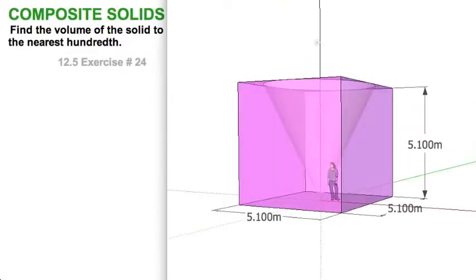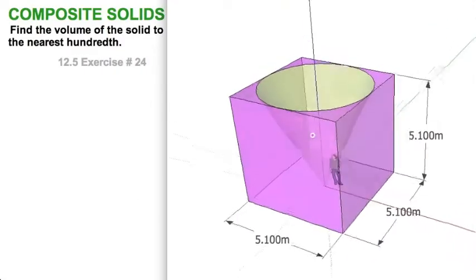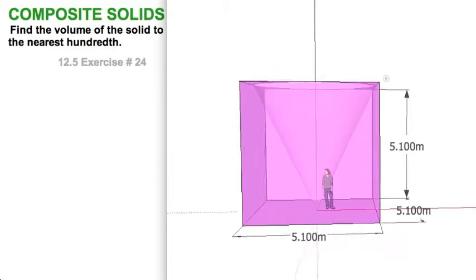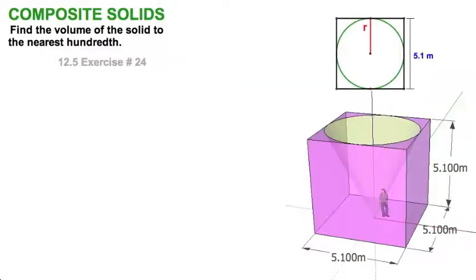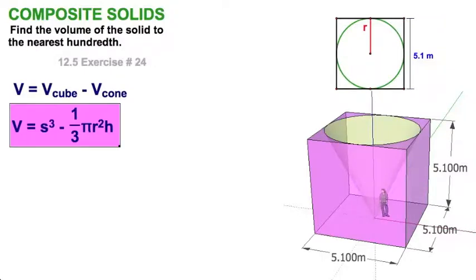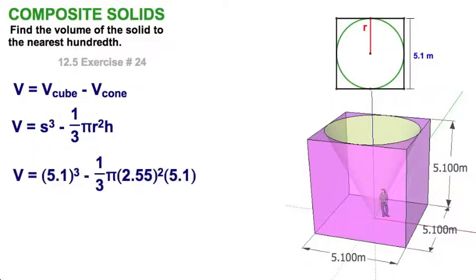Well, here we are with another composite solid. We have a cube, and we have subtracted, or taken away from it, this cone. This cone has the same height as the cube. So, let's get right to it. We have a static drawing over here, and we're just going to show the setup. Cube minus cone. Side cubed minus one-third pi r squared h. The substitution. Well, five and one-tenth is, of course, the side of the cube, and the radius. Remember, that's not the radius of the polygon. It's the radius of the circle, which is the apothem of the polygon.